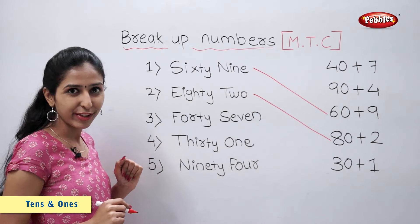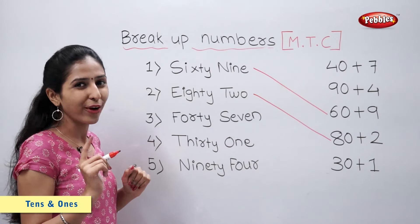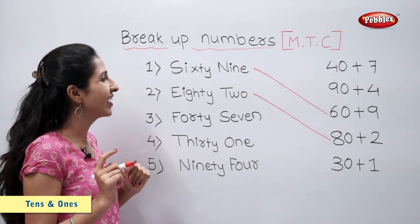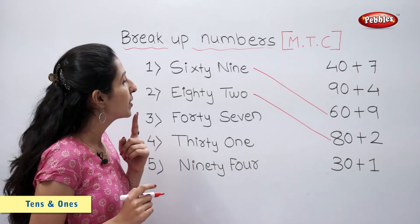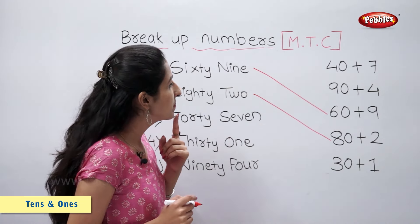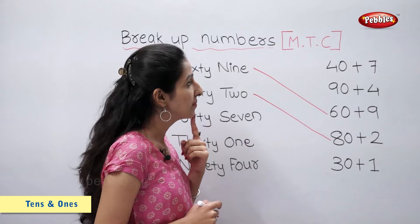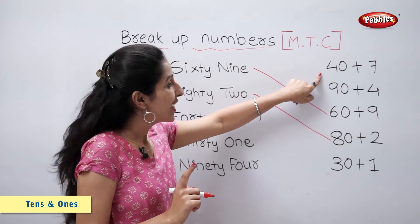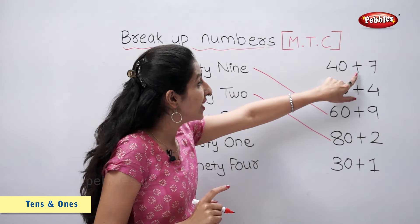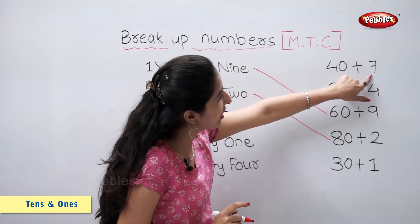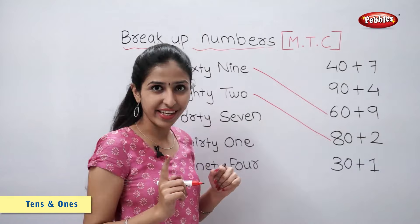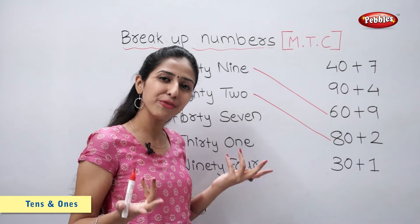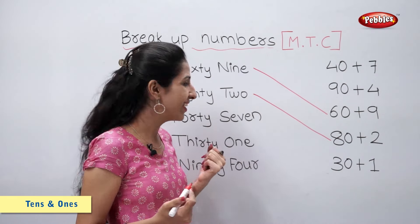Next is 47. Let's find 47. 40 plus 7 is equal to 47.